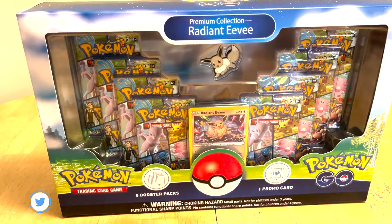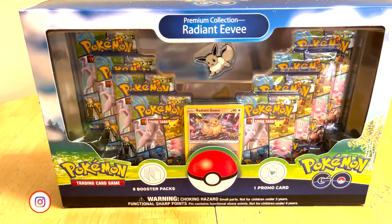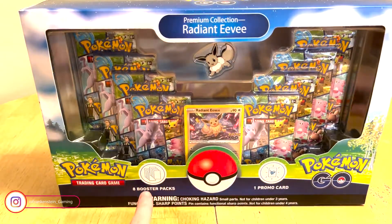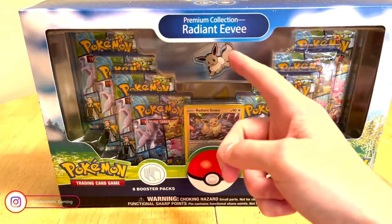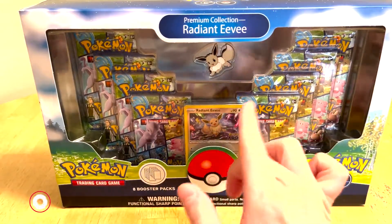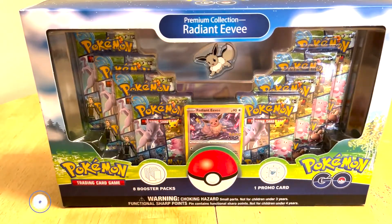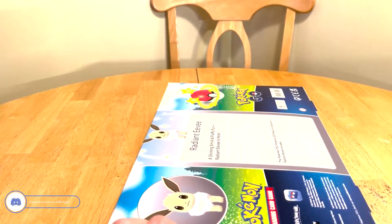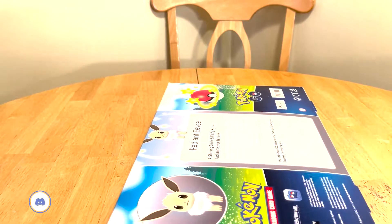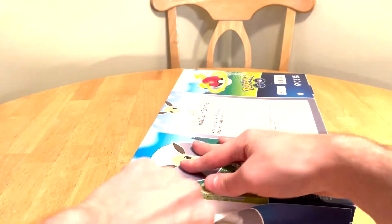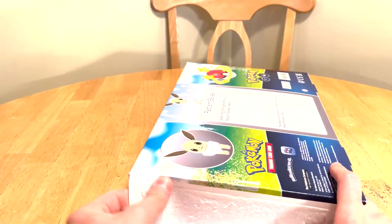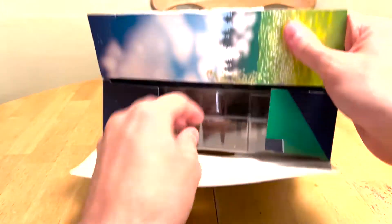So in the premium collection, Radiant Eevee, I got this from the Pokemon Center for Pokemon Go. We're getting eight booster packs, the Eevee pin, the promo card, and behind it there is a playmat, so that's exciting. I mostly bought it for the playmat, because I actually don't currently have one, so I figured, why not? And as much as I like how this box looks, we're going to check it out.